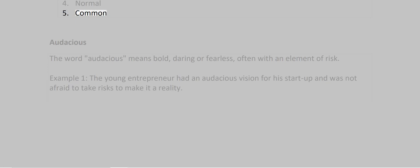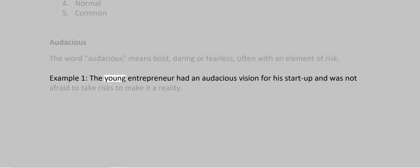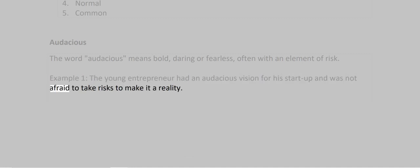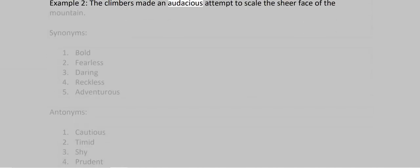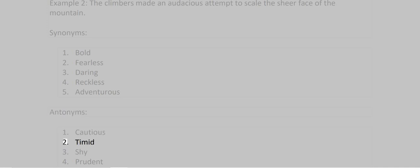Audacious. The word audacious means bold, daring, or fearless, often with an element of risk. Example 1: The young entrepreneur had an audacious vision for his startup and was not afraid to take risks to make it a reality. Example 2: The climbers made an audacious attempt to scale the sheer face of the mountain. Synonyms: 1. Bold 2. Fearless 3. Daring 4. Reckless 5. Adventurous. Antonyms: 1. Cautious 2. Timid 3. Shy 4. Prudent 5. Conservative.